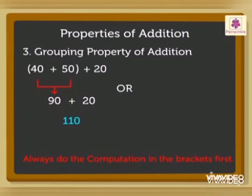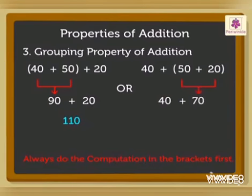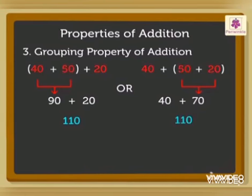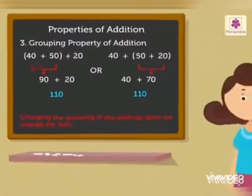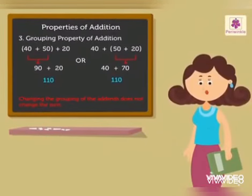Now, let us change the addends in the brackets and add them. Therefore, we have 40 plus 50 plus 20 in bracket. So, 40 plus 70 is equal to 110. Thus, we come to know that 3 or more numbers can be added by putting them in 2 groups placed in bracket. Changing the group of the addends does not change the sum. You must have definitely enjoyed revising the addition concept and properties.